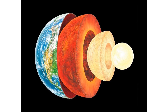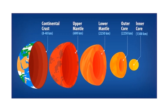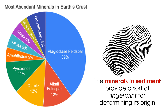The earth consists of many layers, like an onion. Humans live on the outermost layer, a thin layer called the crust. The most common minerals in the crust are quartz and feldspar, which tend to be the most common minerals in sediment. A sediment sample is also likely to contain calcite, various clays, and micas. These minerals and their concentrations can help you determine whether sediment is lithogenous, biogenous, hydrogenous, or cosmogenous — each type has its own unique mineral fingerprint.